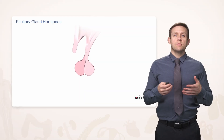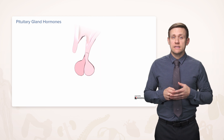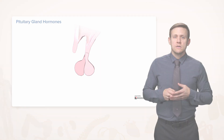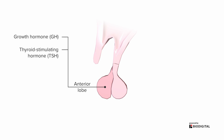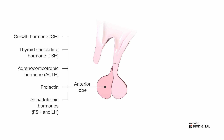What are some of the hormones produced by the pituitary gland? The anterior lobe has more than the posterior lobe, and they are growth hormone, thyroid stimulating hormone, adrenocorticotropic hormone, prolactin, and the gonadotropic hormones, which come in two varieties: follicle stimulating hormone and luteinizing hormone.